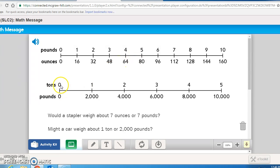This is showing you tons converted to pounds. So if I have 1 ton, I multiply it by 2,000 to get 2,000 pounds. 2 tons, I multiply it by 2,000 to get 4,000 pounds. 3 tons, I multiply it by 2,000, and I get 6,000 pounds, and so forth. So would a stapler weigh about 7 ounces or 7 pounds? I always like to think about a 4-pound bag of sugar. Would my stapler weigh more than that or less than that? Oh, definitely less. So my stapler must weigh about 7 ounces.